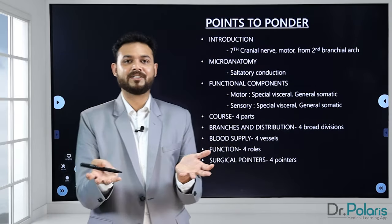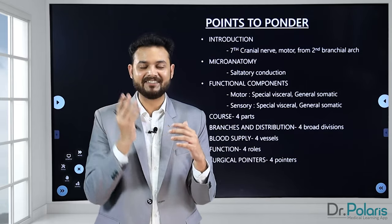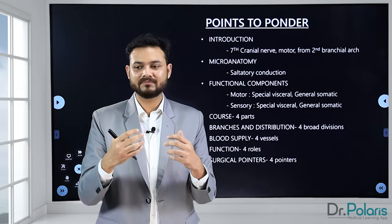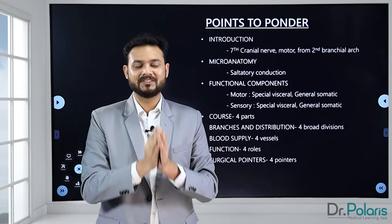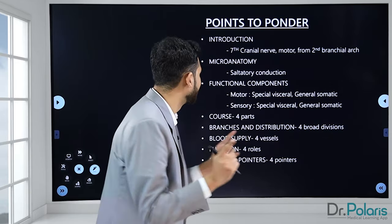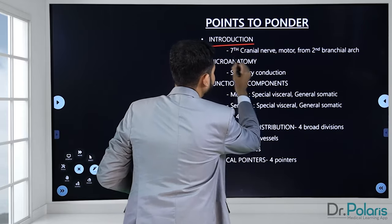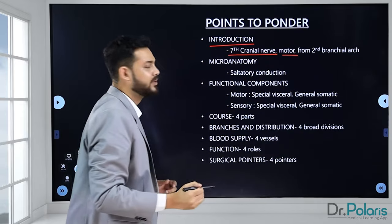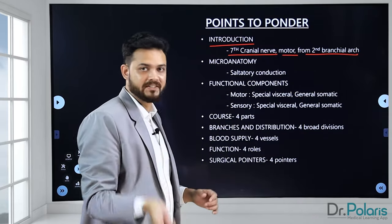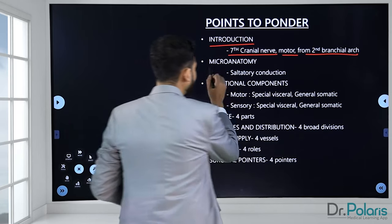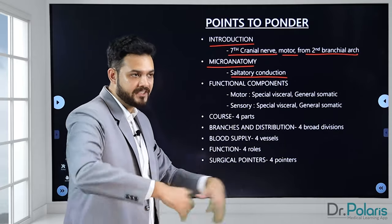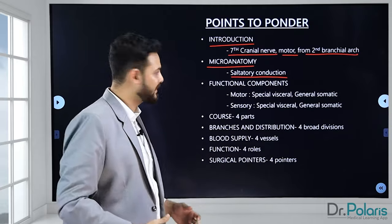To sum up this lecture: we traced each segment of the facial nerve in detail. The rule of four runs throughout — four branch divisions, four supplying vessels, four functions, and four surgical pointers. The seventh cranial nerve has a motor root and a sensory root and is a second branchial arch nerve. We discussed the solitary conduction, why it is myelinated, why high conduction velocity is needed to produce facial expressions, and the motor and sensory nuclei.